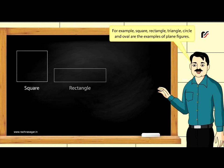For example, square, rectangle, triangle, circle and oval are the examples of plain figures. Let's learn about their sides and corners.